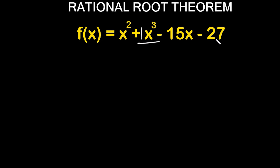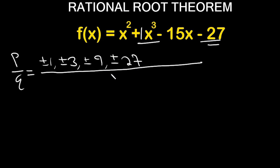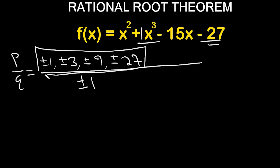My constant is negative 27. Doing p over q — factors of the constant negative 27 give plus or minus 1, plus or minus 3, plus or minus 9, and plus or minus 27. Factors of the leading coefficient 1 give simply plus or minus 1. Since everything divides by 1, the result is just what's in the numerator. So the possible rational roots are plus or minus 1, 3, 9, and 27. That problem is done.